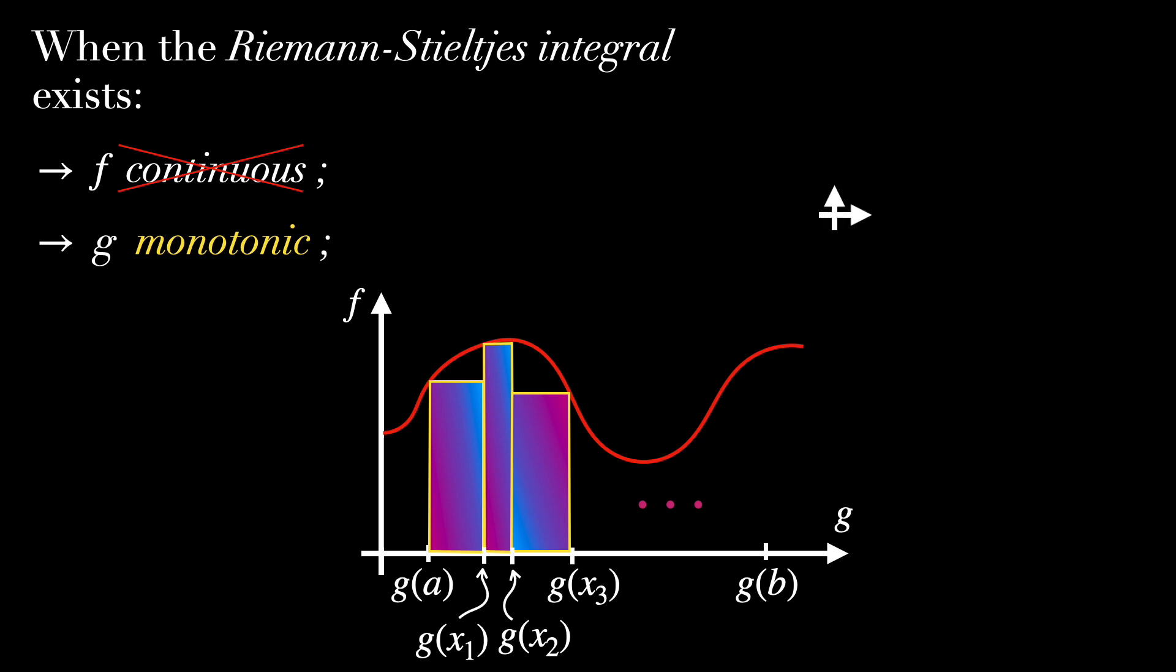Again, the continuity of f is not actually necessary here, but more often than not, it's a common condition. Another common condition is to require g to be monotonic. So, g is either increasing or decreasing, which implies that g is also of bounded variation.